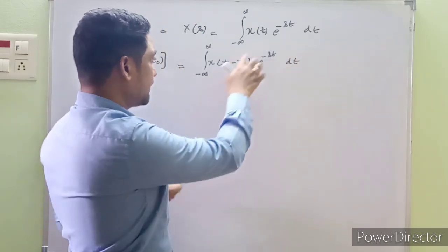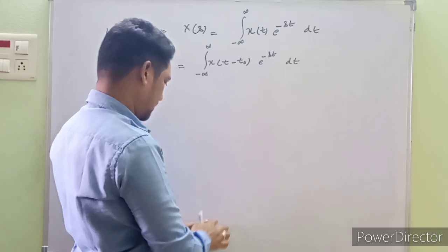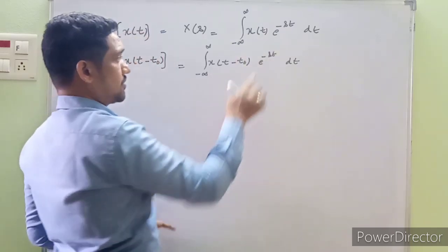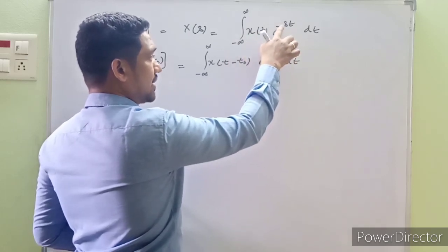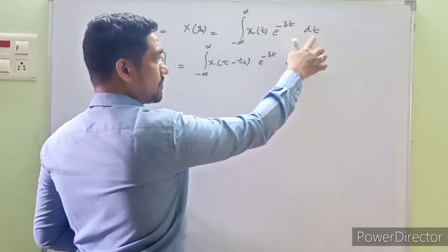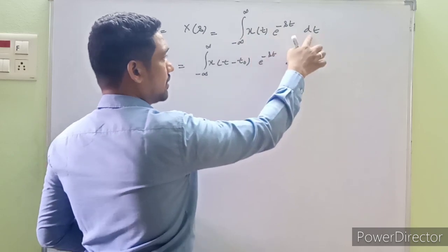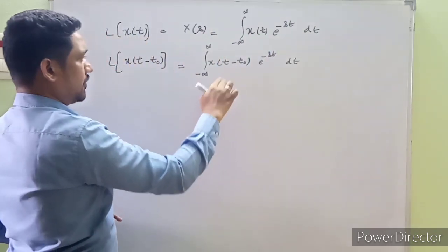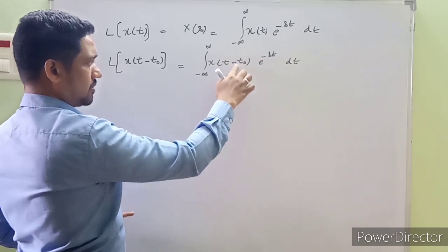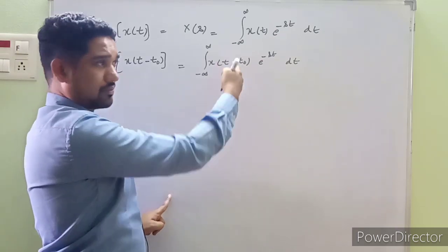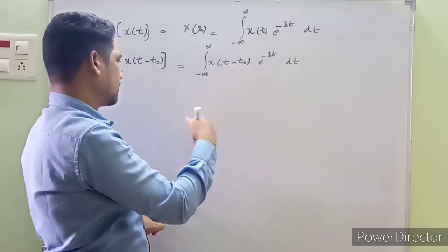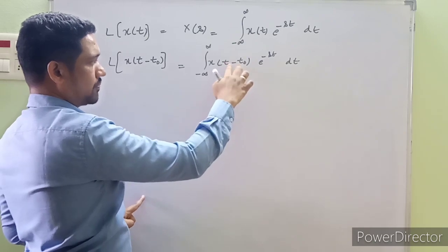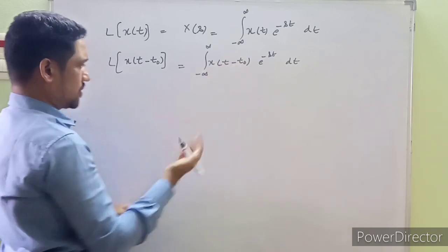Watch carefully — at the end we need to compare this equation to a simpler form. The standard form is the integral of X(t) · e^(-sT) dT, which equals X(s). For X(t - t₀), it would be very tedious to simplify directly, so the better idea is to use a substitution.